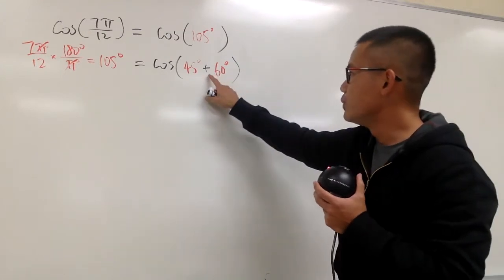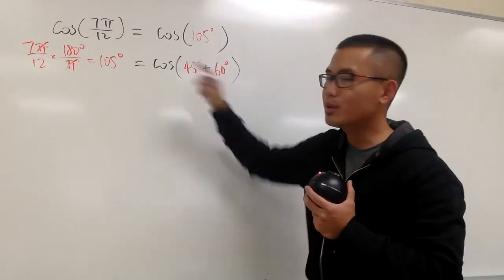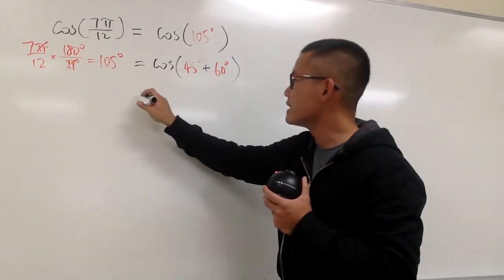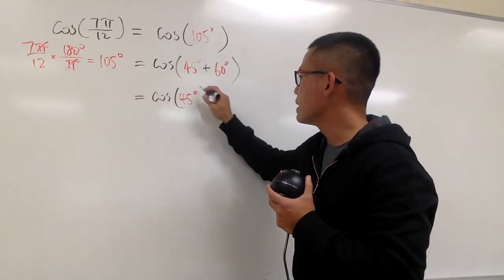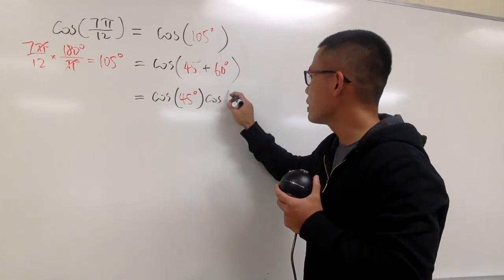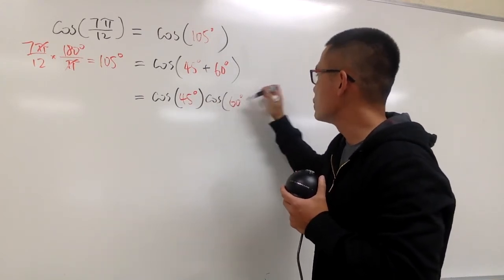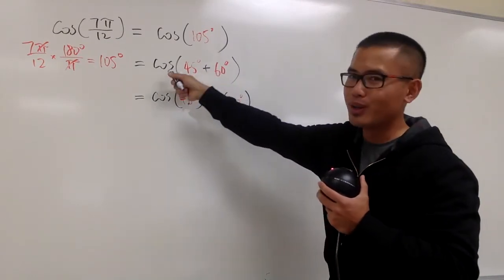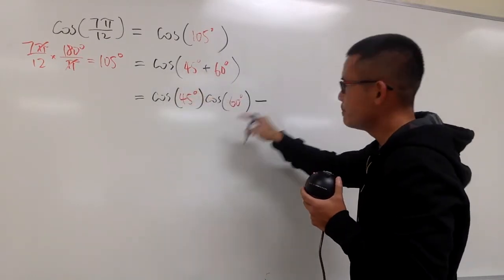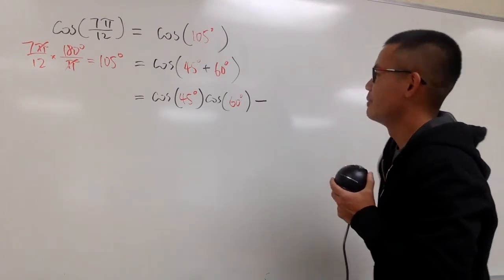And we can use the angle sum formula for the cosine, right? Which says this will be cosine of the first, which is cosine 45 degrees, times cosine of the second, which is the 60 degrees right here. And when you have the plus for the cosine, it's actually a minus in between, okay? So be careful with this.